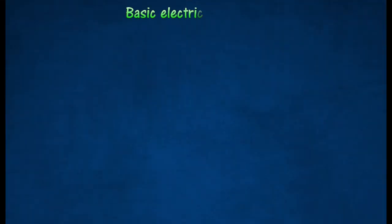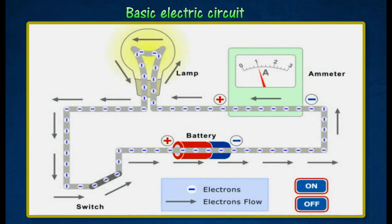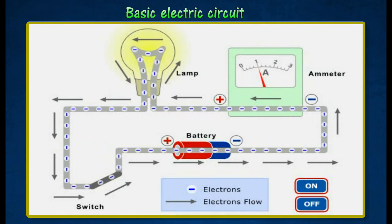A basic electric circuit consists of a metallic wire connected to an electrical cell and an electrical component such as a lamp. The wire contains a large number of free electrons that can move easily from atom to atom. It is the movement of these free electrons that give rise to the current.